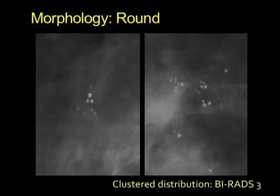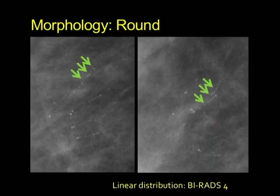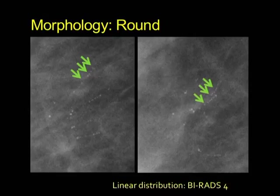Here's an example of round calcifications which are clustered — therefore a BIRADS 3 on a baseline. Another example shows round calcifications in a linear distribution — so this would be a BIRADS 4, and you would biopsy.